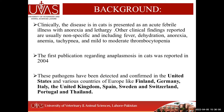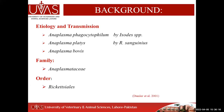After 2004, the pathogen was demonstrated in cats from different countries including USA, Finland, Germany, Italy, United Kingdom, Spain, Sweden, Switzerland, Portugal, and Thailand. Anaplasma phagocytophilum and anaplasma platys are transmitted by Ixodes and Rhipicephalus sanguineus ticks respectively. Recently, anaplasma bovis has also been reported to cause anaplasmosis in cats.